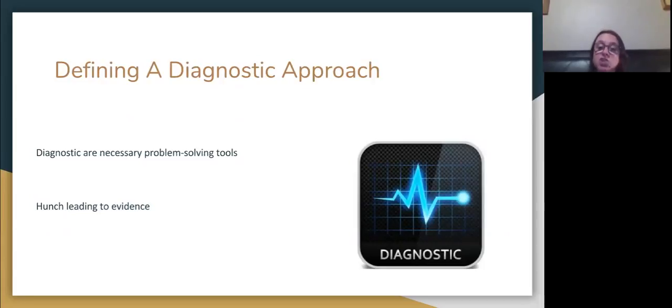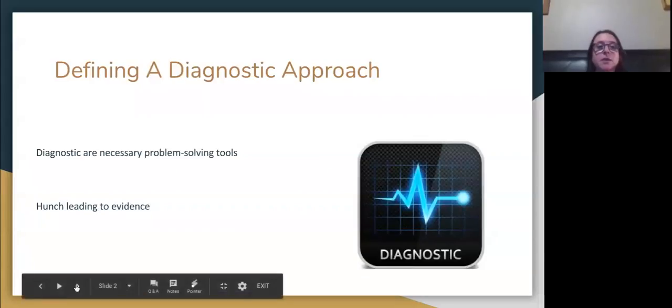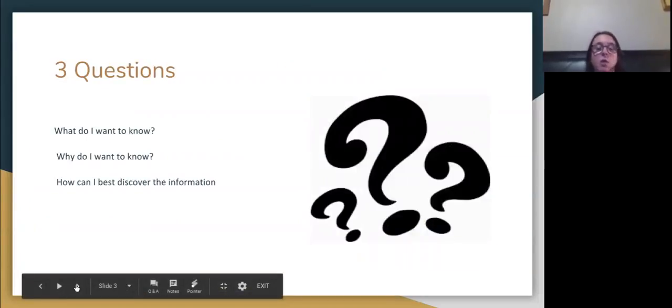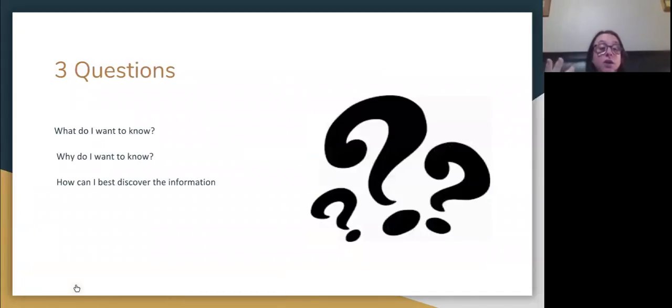This is what we want to start out with: getting to know our children, getting some hunches and ideas about what's going on, and then finding ways to find out if that's actually what's occurring. The questions we want to ask ourselves when we have our hunches are: What do I want to know? Why do I want to know? And how can I best discover the information?